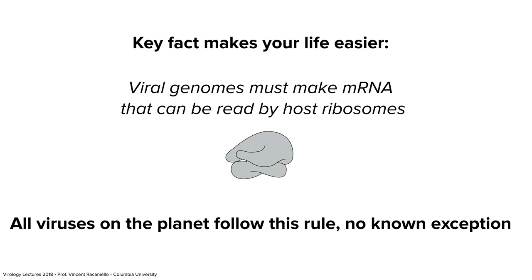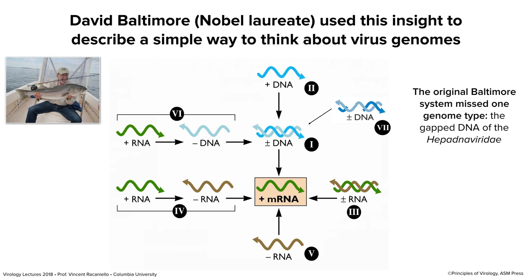That ribosome — does it remind you of anything else? A turkey, right! All viruses have to make mRNA that can be read. David Baltimore, a virologist his whole career, took advantage of this. He won a Nobel Prize in the 70s for discovering reverse transcriptase, but in the early 70s he was actually a student here in New York City. He said every virus has to make mRNA, so can we arrange the different kinds of viruses — the seven different virus types — and make them all go to mRNA? He devised what's called the Baltimore system, placing mRNA in a box in the middle and saying every virus genome has to reach it.